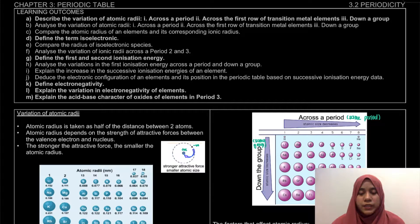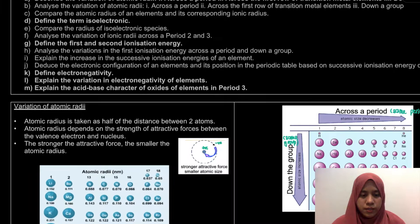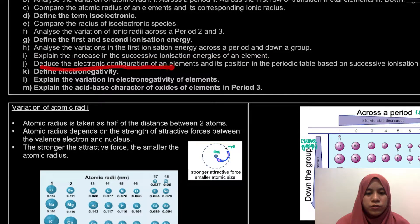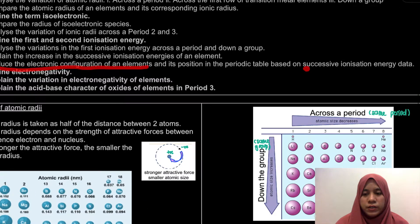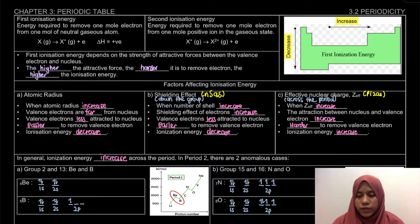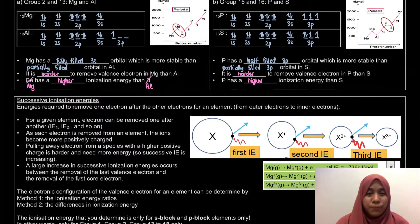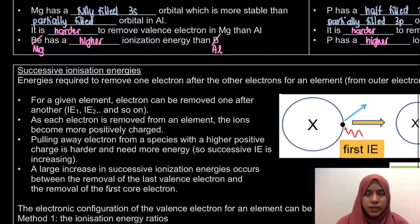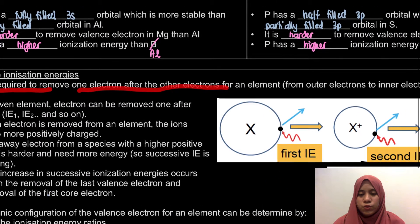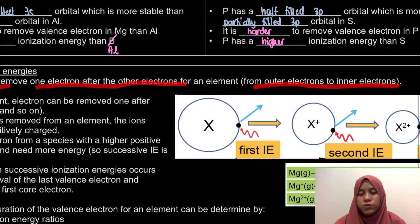Assalamualaikum and hello everyone. In this video, we will be discussing successive ionization energy. We will explain the increase in successive ionization energy of an element and deduce the electronic configuration of an element based on successive ionization energy data. Successive ionization energy means the energy required to remove one electron after another, from the outer electrons to the inner electrons.